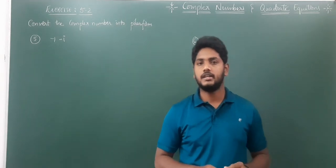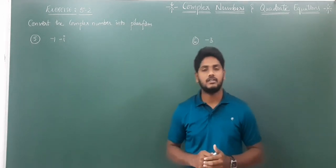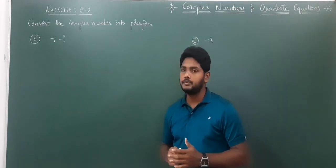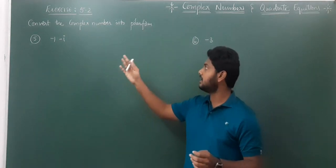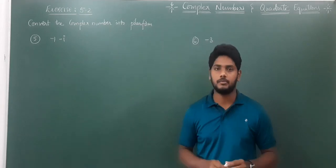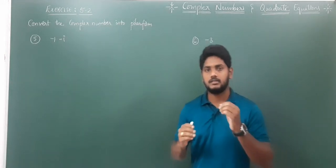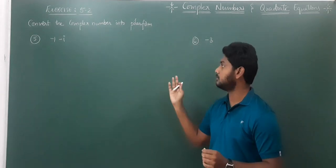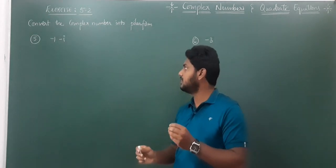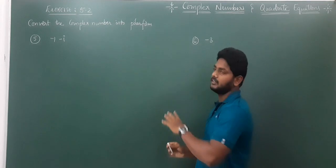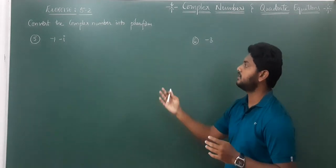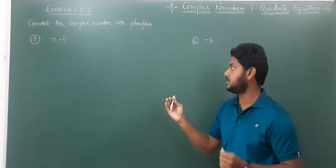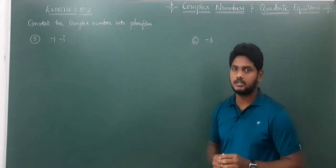Good afternoon students. Today we will continue the topic of complex numbers and quadratic equations. In the previous lecture, we covered Exercise 5.2 problems based on converting complex numbers into polar form. You were assigned those as homework, but I will explain two questions which are slightly different compared to the remaining questions. If you have already done them, you can skip ahead.